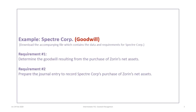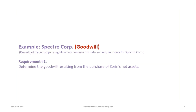This tutorial is based on the SpectreCorp example, so please make sure that you download the correct file so you can follow along. Tutorial 24a will cover requirements 1 and 2 in that problem. Let's begin with SpectreCorp requirement 1, where we will determine the goodwill resulting from the purchase of Zorin's net assets.